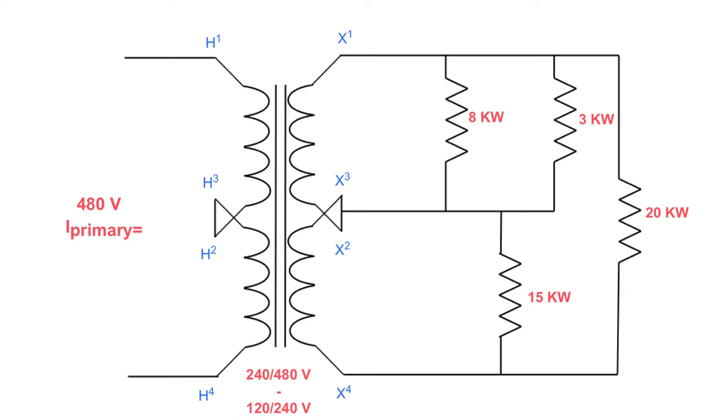Which means that my power in is power out, power is my friend. So all we have to do to get this primary current on this side, why don't we just add 8 plus 3 plus 20 plus 15, and find out what this side of the transformer is asking for.